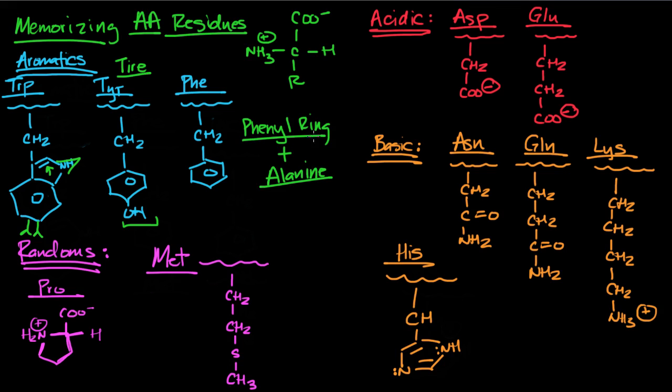When it comes to the other two, the random ones, I call these random because they don't really fit into any specific category. Proline, there's a five-membered ring. I think pro, pentagon, I associate the two Ps together.